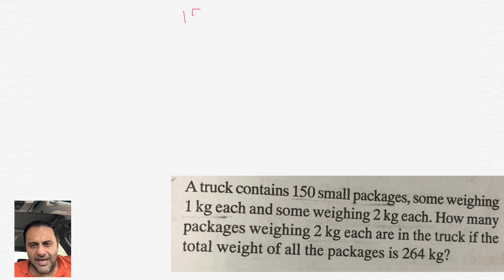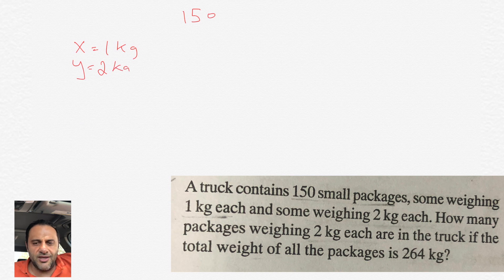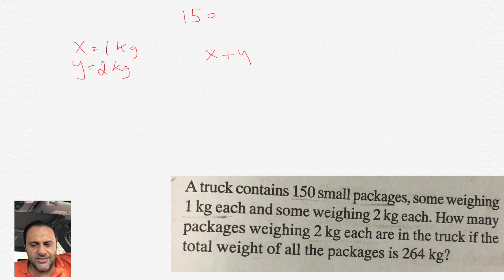I hope you tried it on your own. Let's do it together now. We have 150 total packages and some weigh 1 kilogram, some weigh 2 kilograms. The total weight of all of this is 264 kilograms. As you could see we're going to be able to set up two different equations. Let's let X equal the 1 kilogram packages and Y equal the 2 kilogram packages.